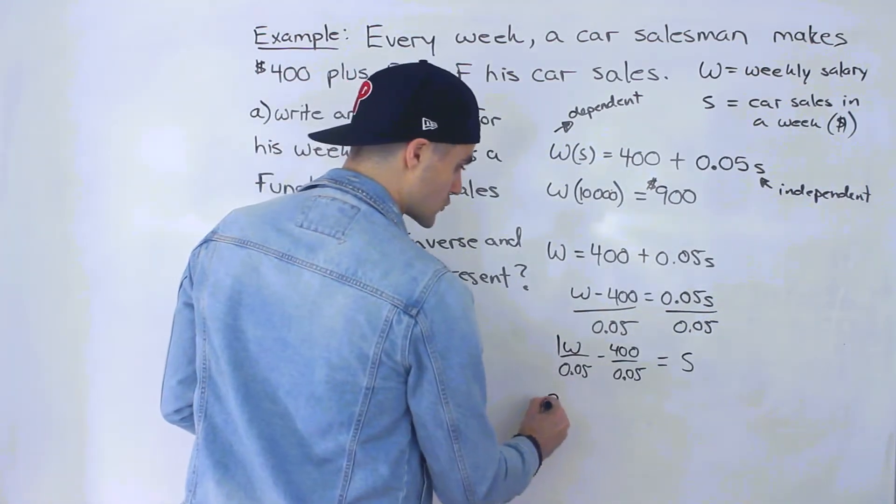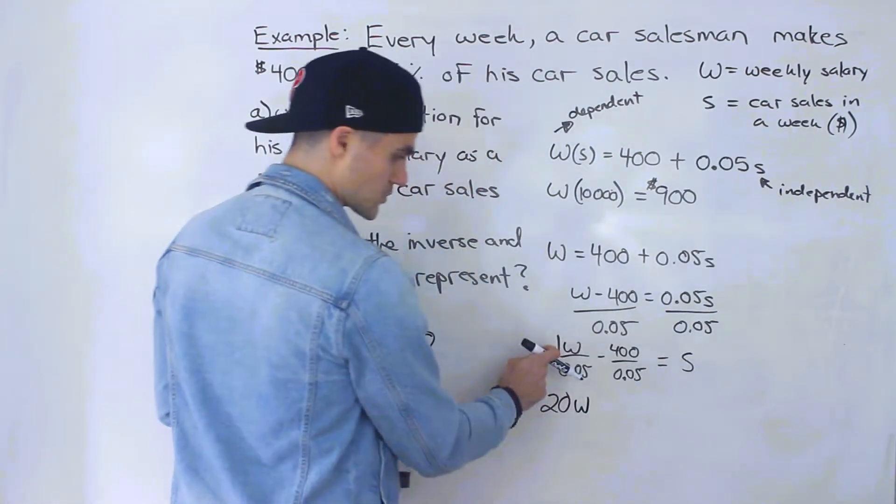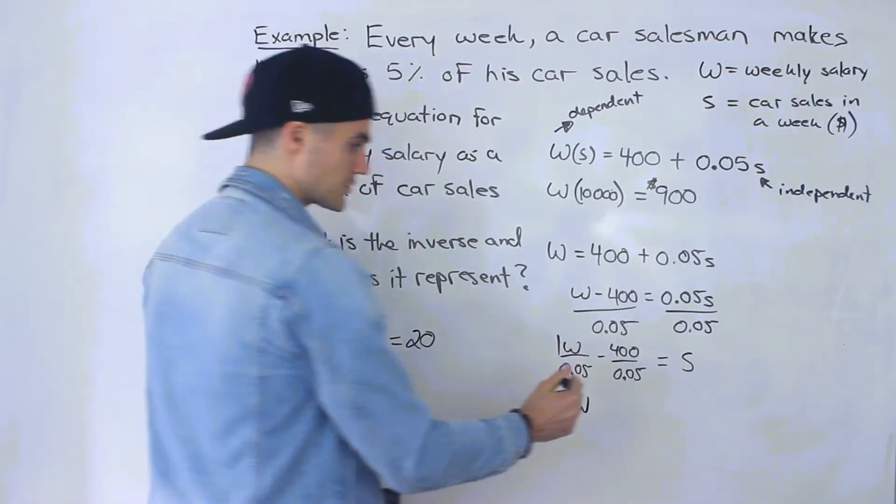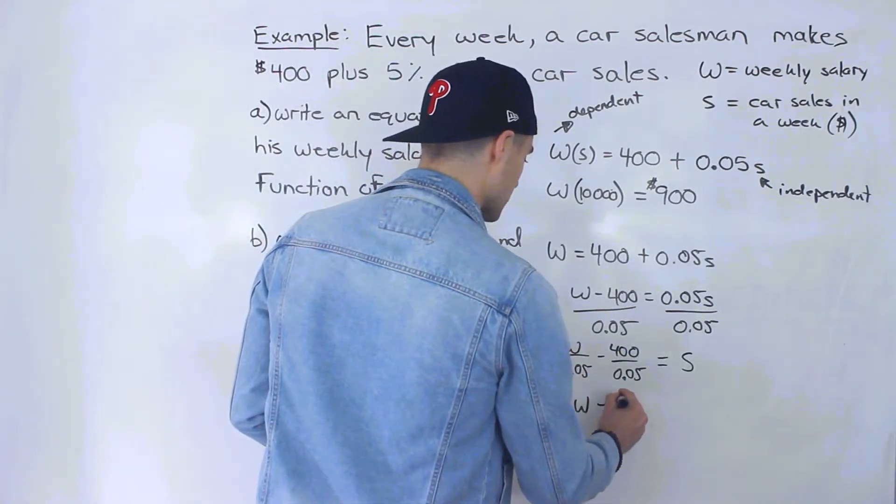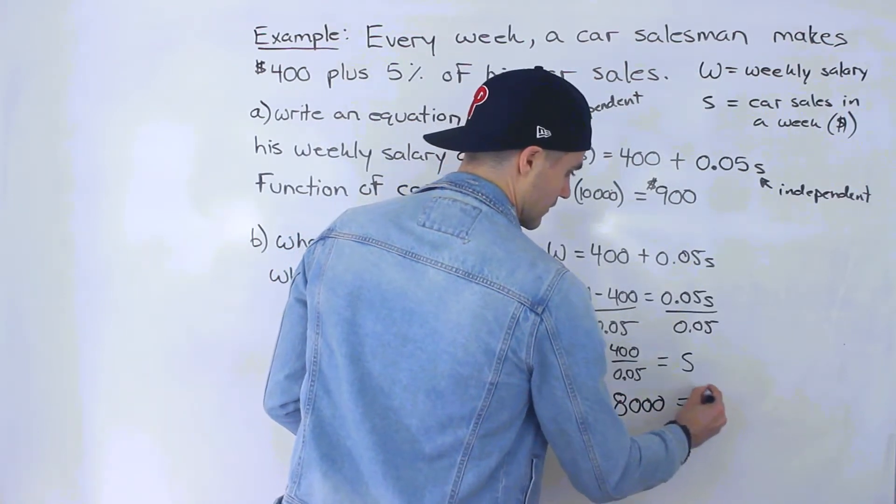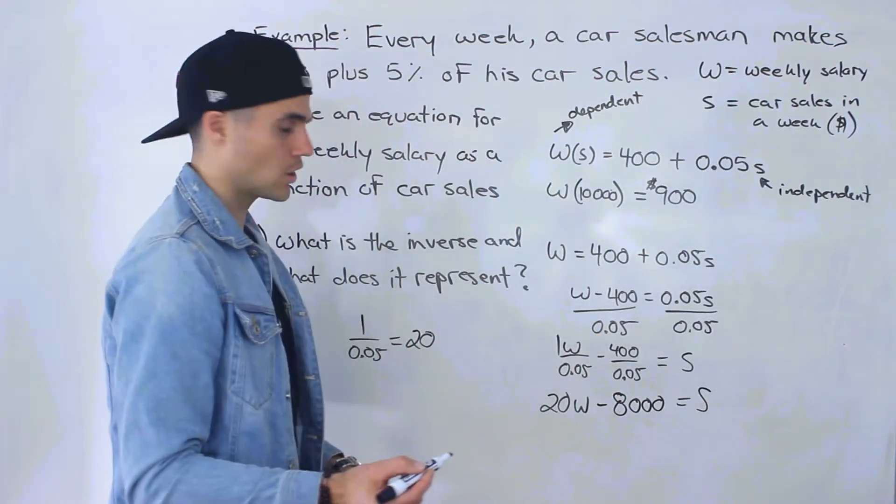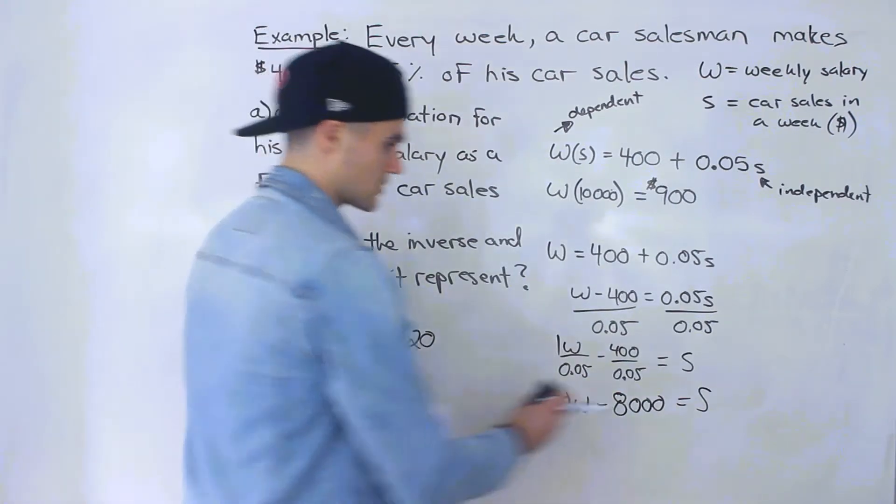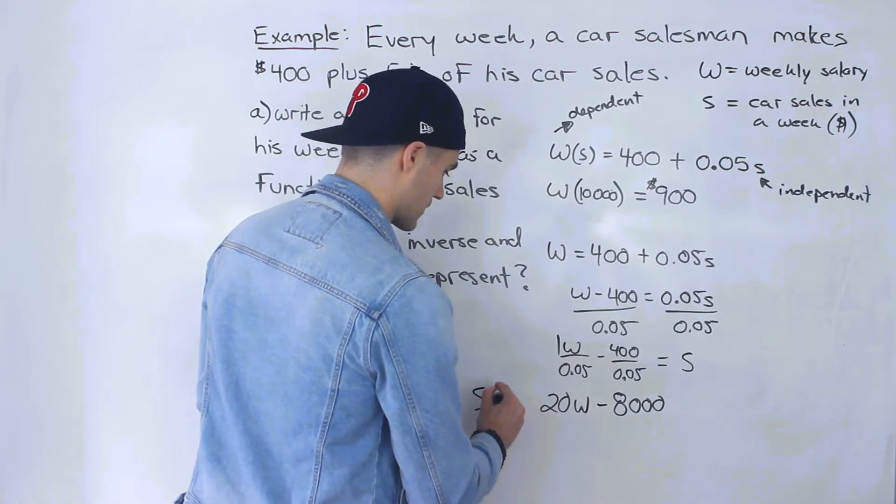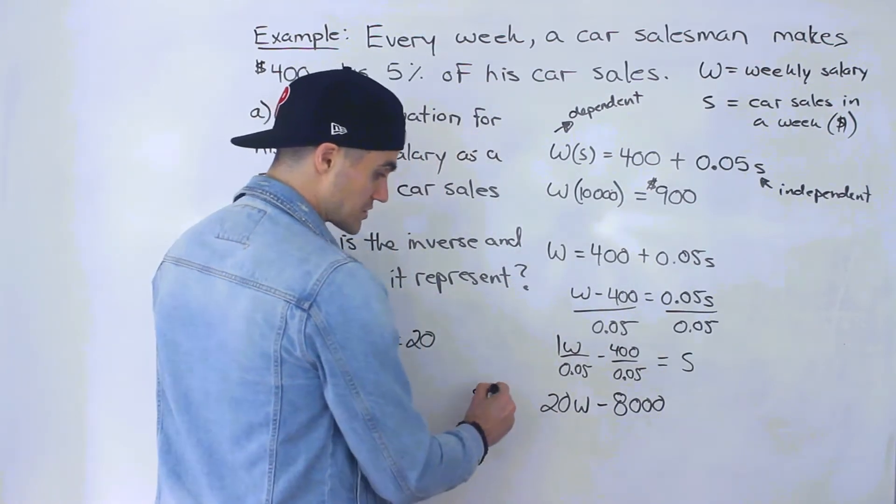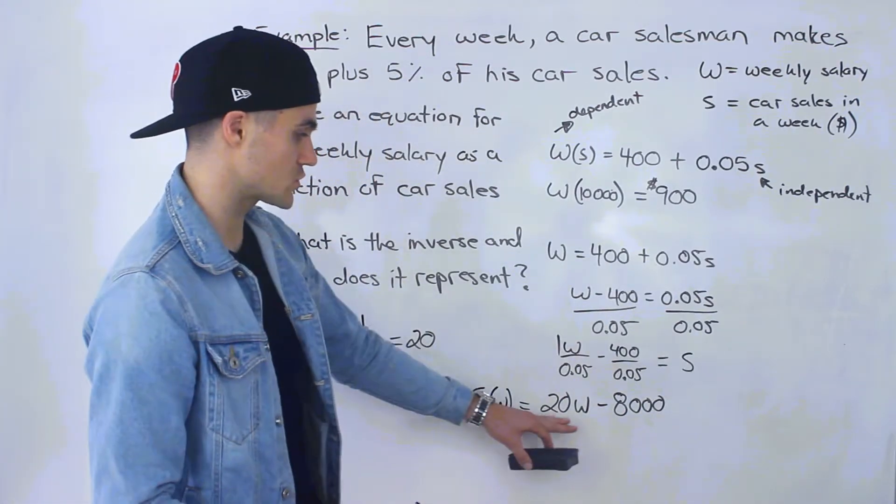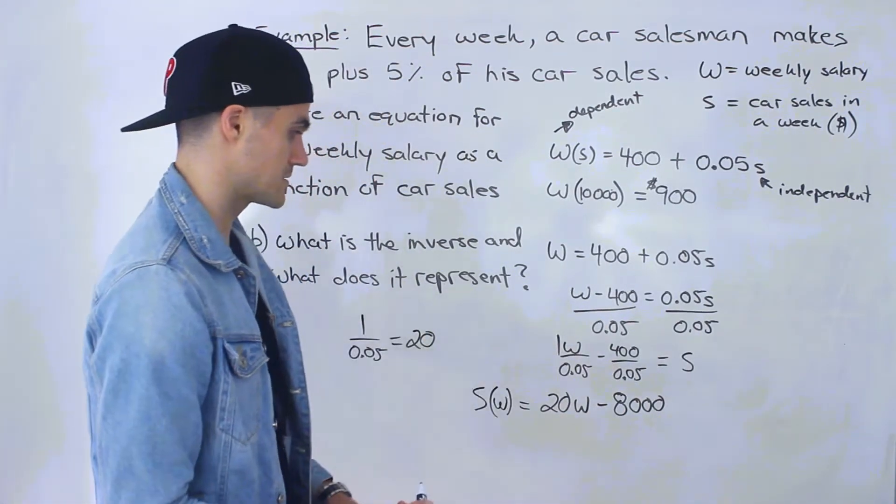So here we'll have 20W. Right, this one divided by 0.05 is 20. And then 400 divided by 0.05, that's actually 8,000. And now we have the car sales isolated. So I'm actually going to put the car sales here on the left side. So now we have the car sales as a function of the weekly salary, which is 20W minus 8,000.